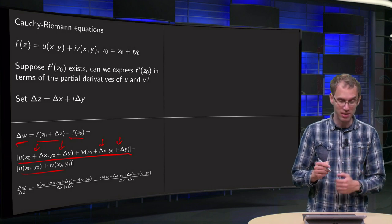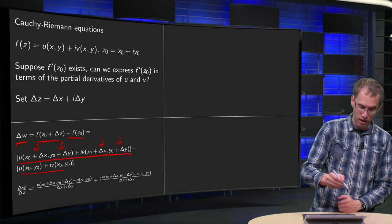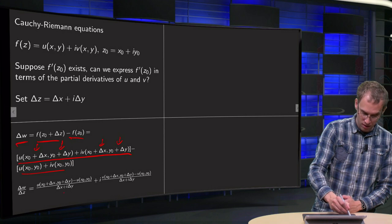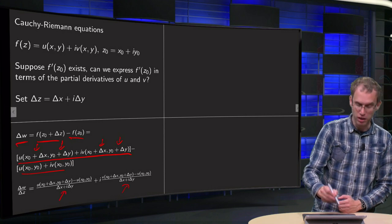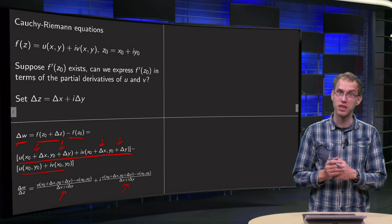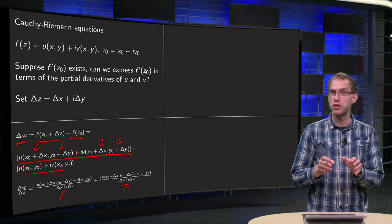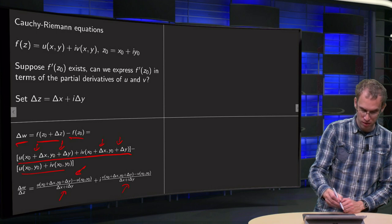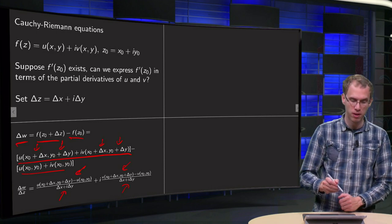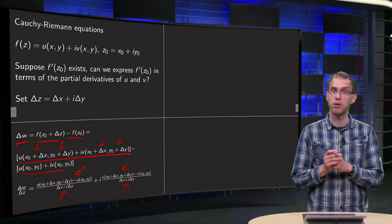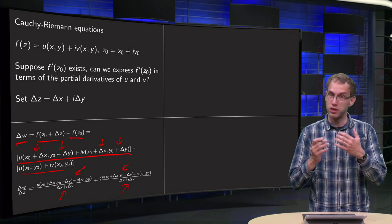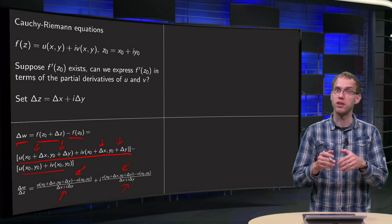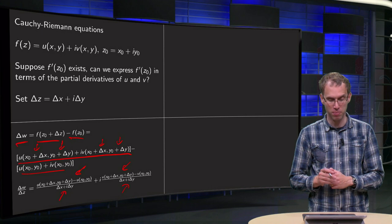Then we can write our Δw over Δz as follows: divide by Δx plus i times Δy for your Δz. And we take separately the real parts and the imaginary parts, so the u and the v over here. The u at (x₀ + Δx, y₀ + Δy) minus u at (x₀, y₀) as real part and similarly for the imaginary part.